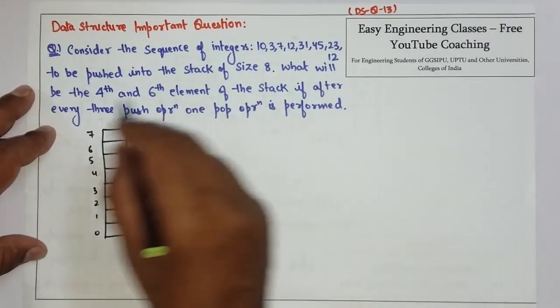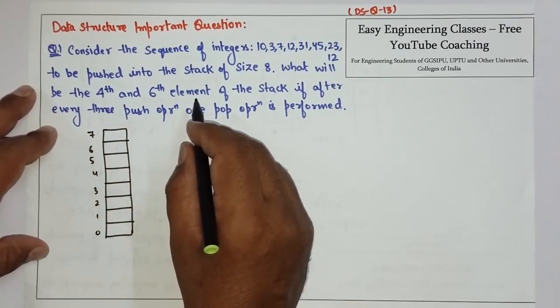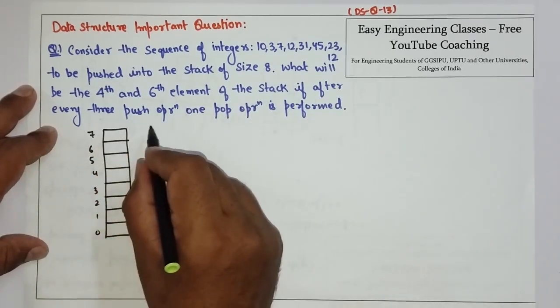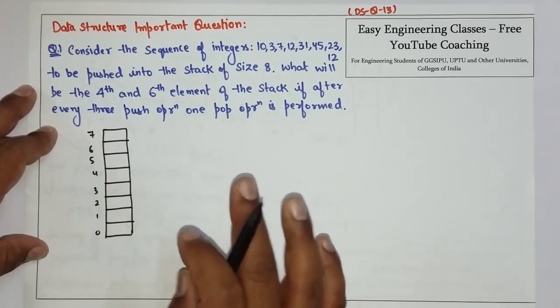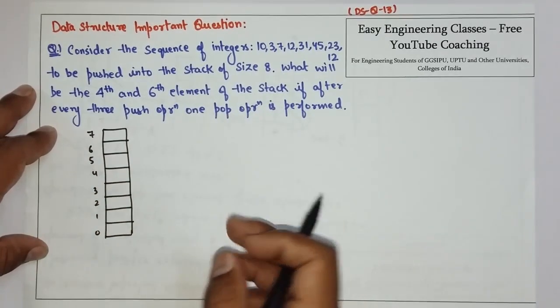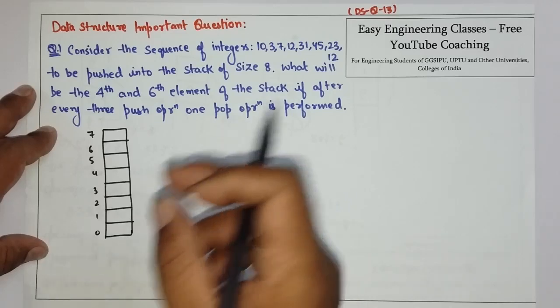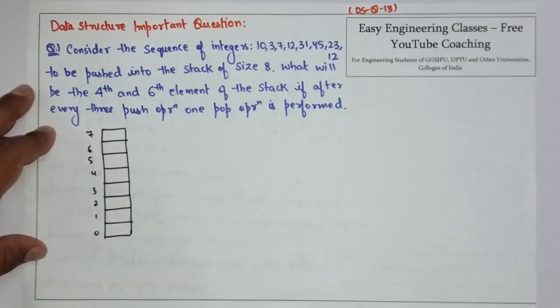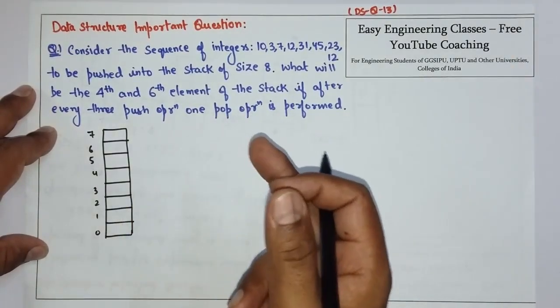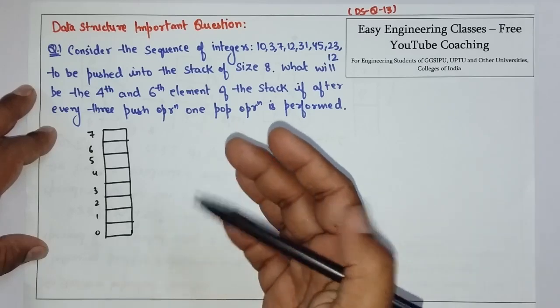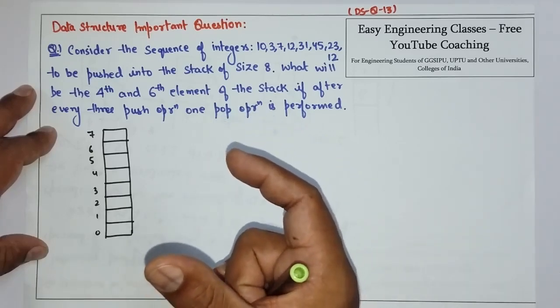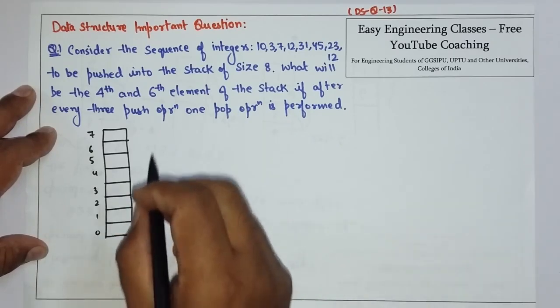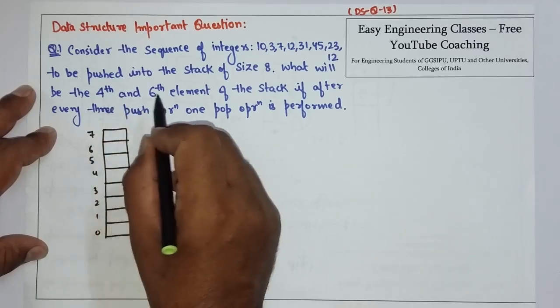The question says, what will be the 4th and 6th element of the stack if after every 3 push operations 1 pop operation is performed. We have to do 3 push operations. We have to enter 3 integers in the stack. And then we have to do 1 pop operation. That means, 3 elements to insert and 1 element to delete. And then we have to tell the 4th and 6th element.